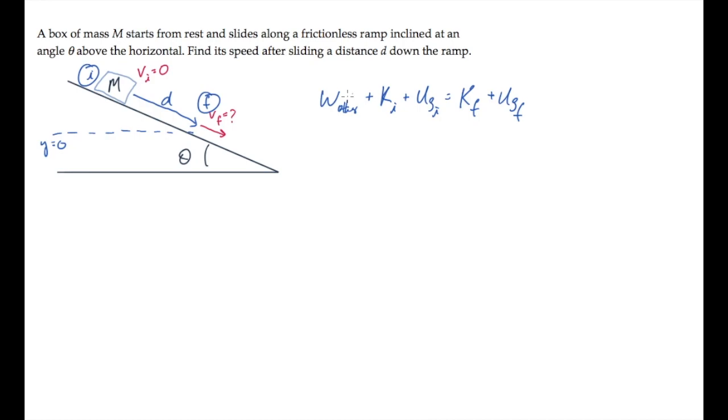Work other is the work done by forces other than those we have a potential for along the path. That equals zero in this case. No forces other than gravity do work on the box.